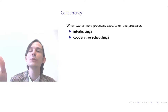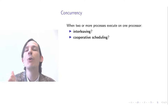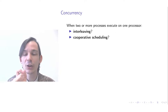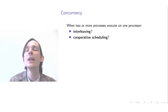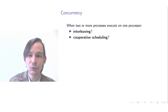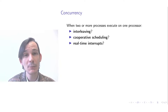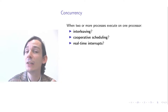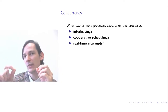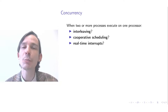You could let a process run on a processor until it itself issues a command that says to the processor: at this point you can swap me out for a different process. That is called cooperative scheduling, because the processes cooperate to ensure all processes get execution time. Alternatively, you could have real-time interrupts so that a real-time clock ticks, and whenever a particular interval has elapsed, a signal interrupts the processor and causes one process to be swapped for another — making the interleaving real-time dependent.